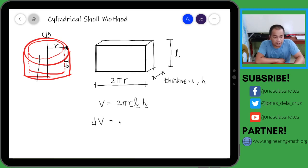Kapag ganyan, yung radius natin is actually x. At saka yung height natin is actually y. Kapag nakaupo yan sa x-axis, we have the radius and the length times the differential thickness.